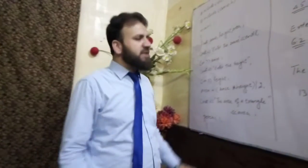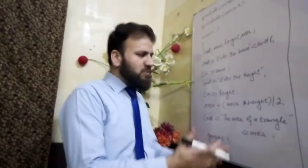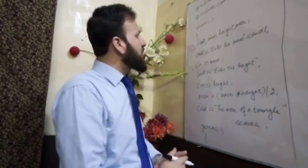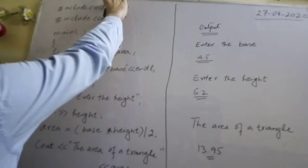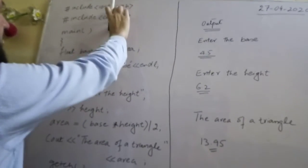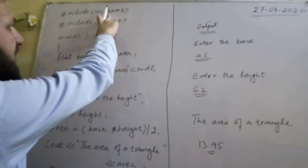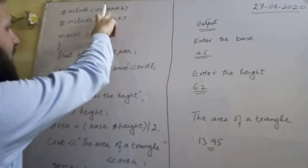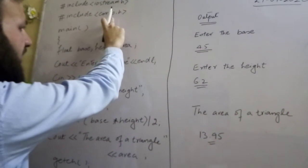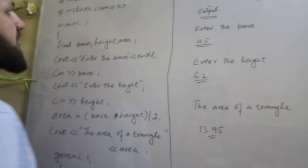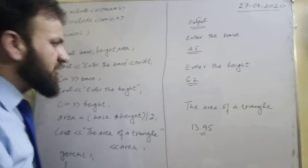This is a very simple program. Now I will explain each step of this program. Include iostream - these two are header files. This header file contains the basic input output operation of the program and this header file contains the coding of getch and clrscr to display the output on the monitor.